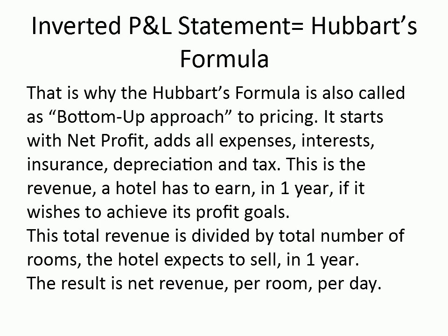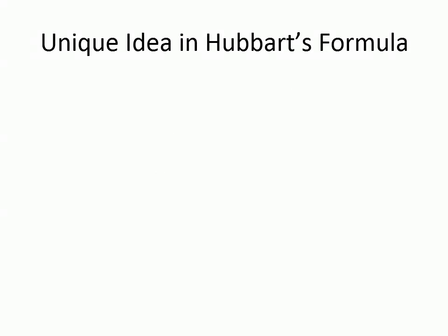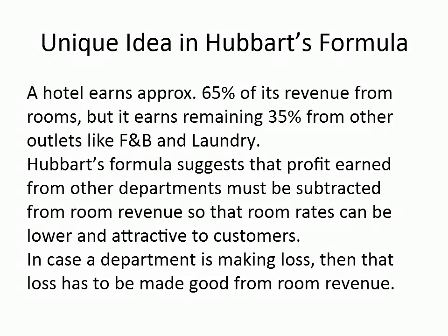Hubbard's formula starts with net profit and adds all expenses — interests, insurance, depreciation, and tax. This is the revenue a hotel has to earn in one year if it wishes to achieve its profit goals. This total revenue is divided by the total number of rooms the hotel expects to sell in one year. The result is net revenue per room per day. Unique idea in Hubbard's formula: a hotel earns approximately 65% of its revenue from rooms, but earns the remaining 35% from other outlets like F&B and laundry.